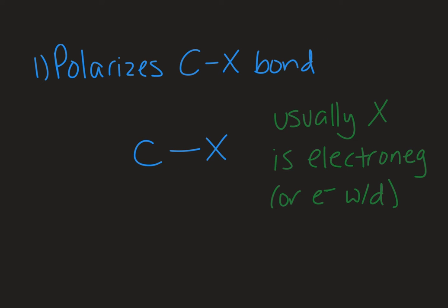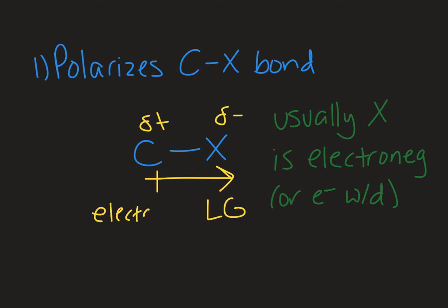The first trend we'll look at is the polarization of the carbon–leaving group bond. If you have a more electronegative or electron-withdrawing group, you're going to end up with a pretty polar bond. That makes for a good leaving group with a high affinity for electrons because it is electronegative, and you also have a pretty electrophilic carbon due to a substantial partial positive charge. The nucleophile could then come in and attack, being really attracted to that electrophilic carbon because of the polarization of that bond.